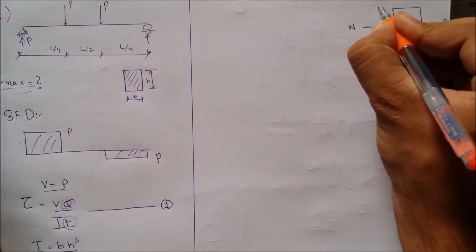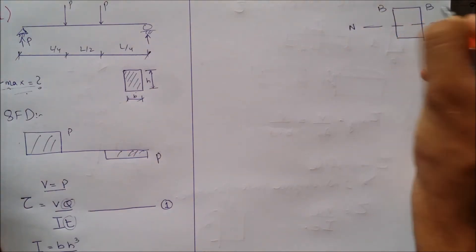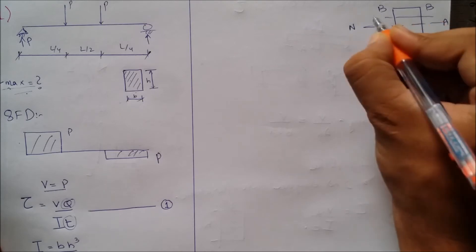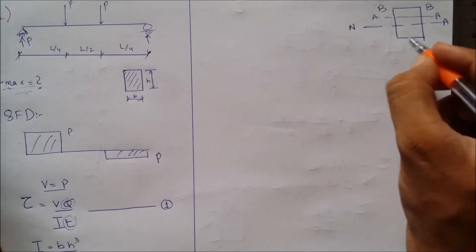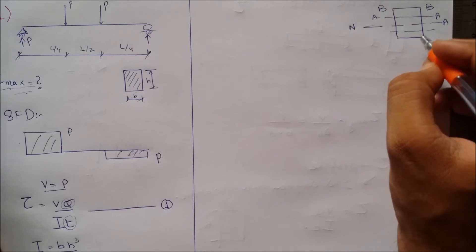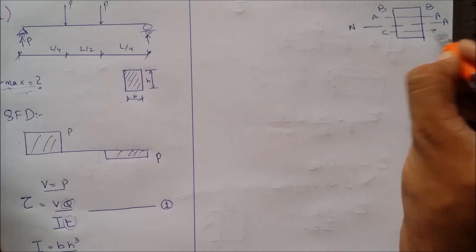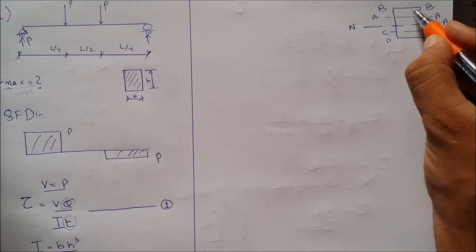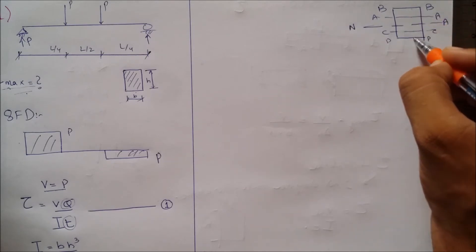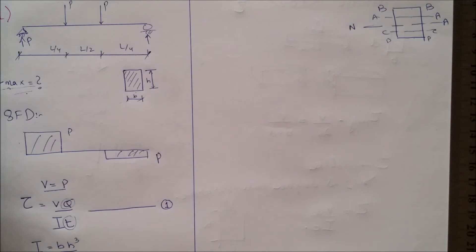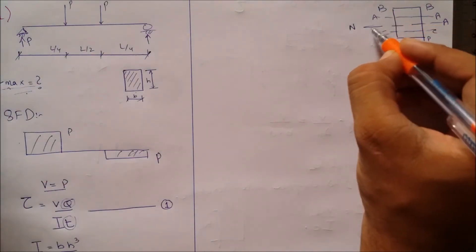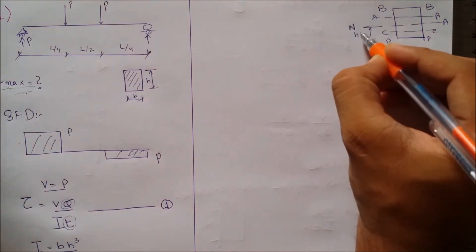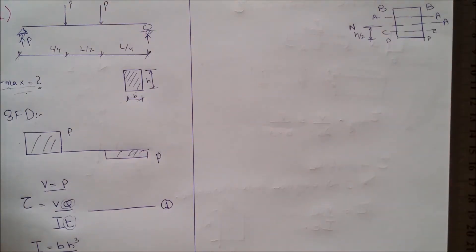Let's call this section as BB, this as AA, this as CC, and this as DD. For a rectangle, the neutral axis is at mid-height when considering elastic structural behavior.